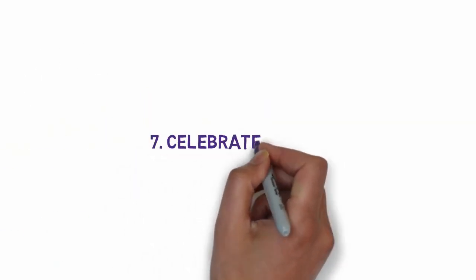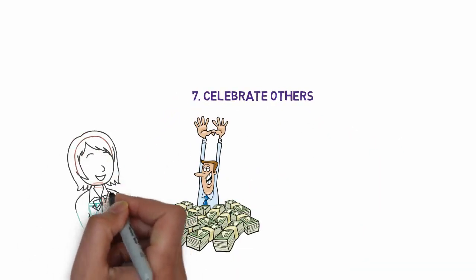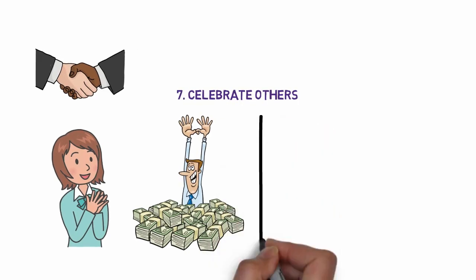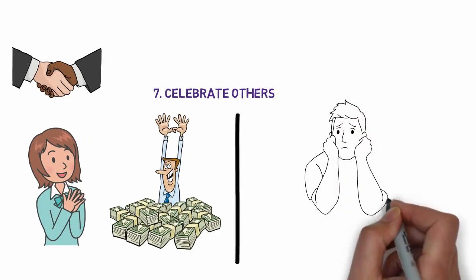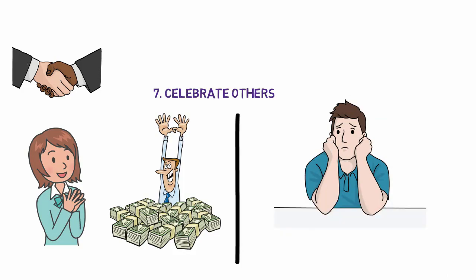7. Celebrate Others. A rich mindset celebrates the successes of others, embraces the competition, and often befriends it. You have two choices, tear down another person's success or be inspired by the example. A poor mindset feels jealousy and bitterness about the successes of others, and it looks at everything as a zero-sum game.